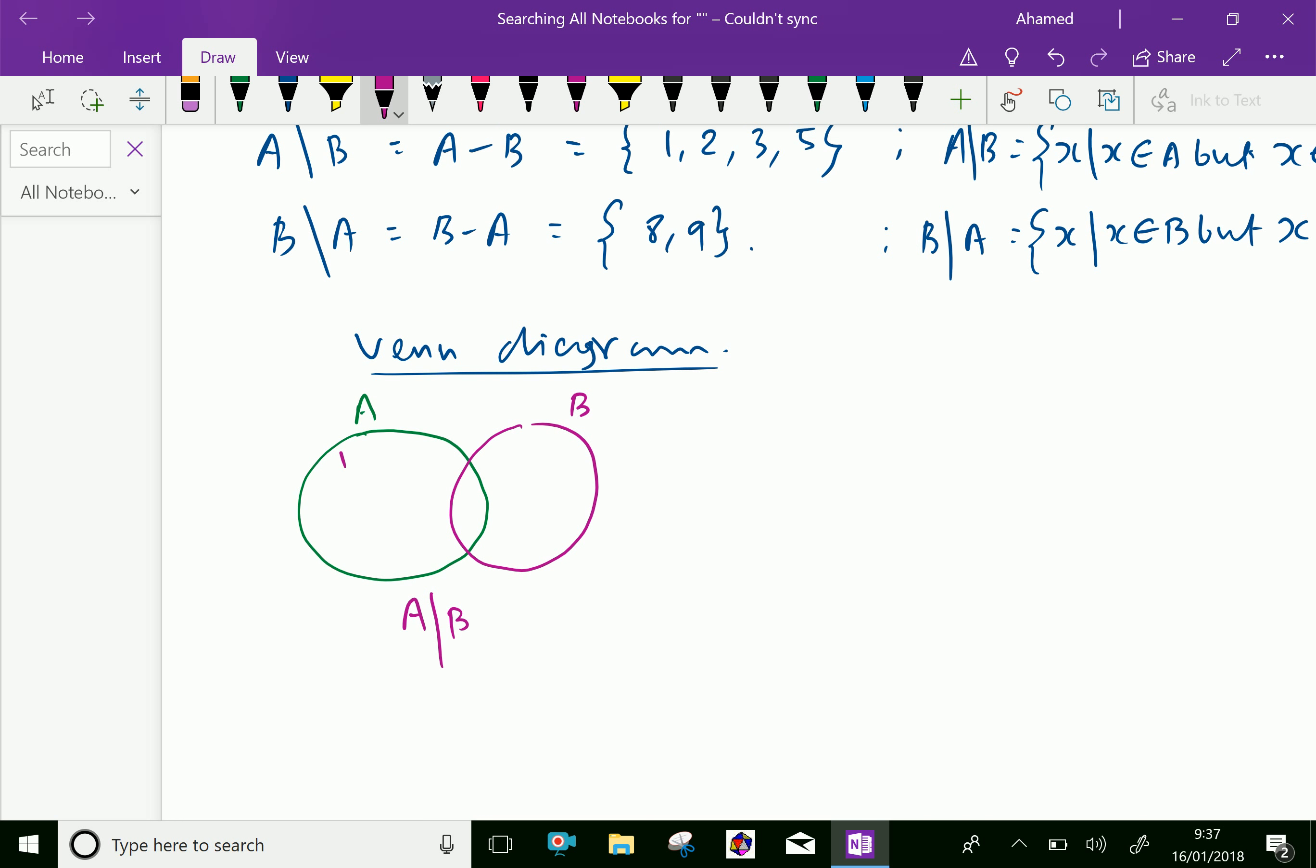That is 1, 2, 3, 4. Let us say this area, like the shaded area represent A slash B.